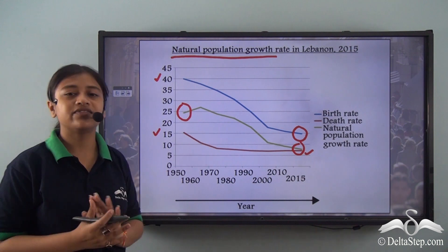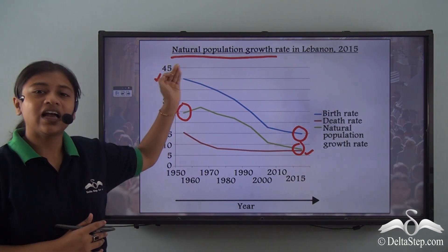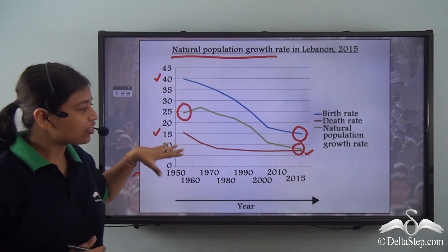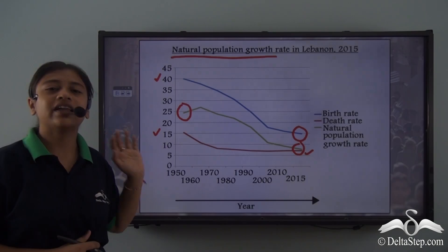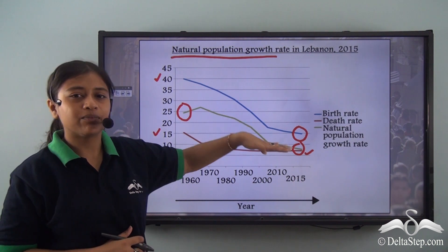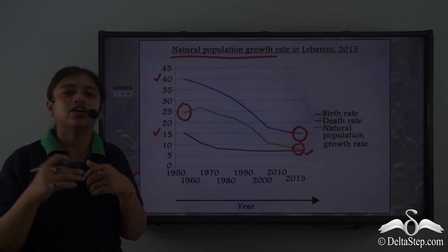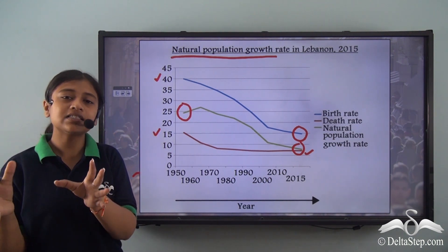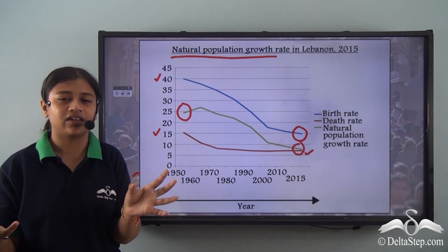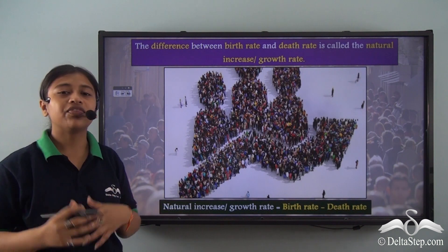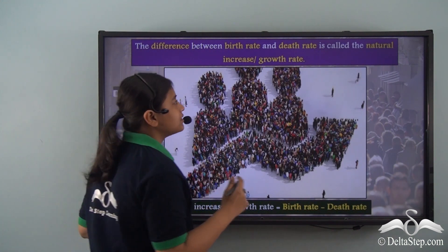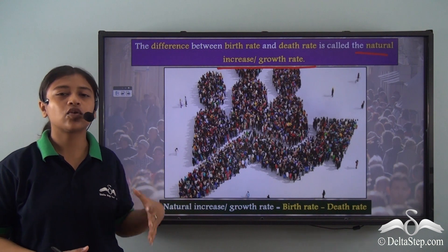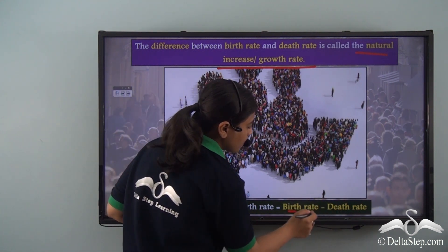With regard to Lebanon, initially where the birth rate was very high and the death rate was also high, the natural change in population was also high. Eventually when the death rate stabilized and the birth rate reduced, the natural change in population also tended to stabilize. The natural increase or growth rate is calculated by deducting death rate from birth rate.